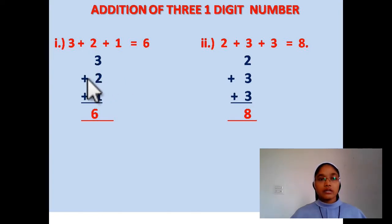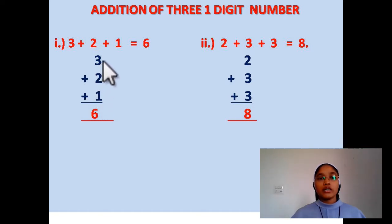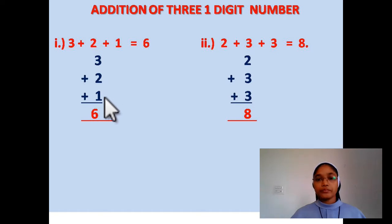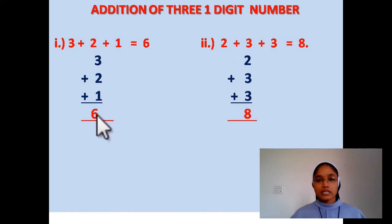3 plus 2 plus 1. We have already arranged these numbers by writing one below the other. Now let us add it: 3 plus 2 is 5, 5 plus 1 is 6. So your answer will be 6.